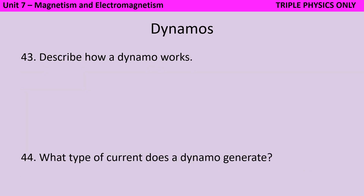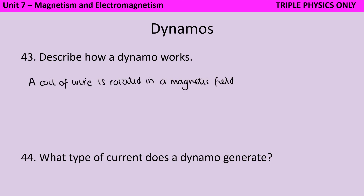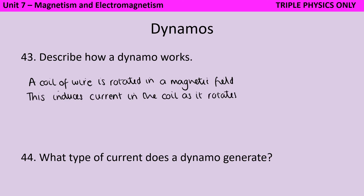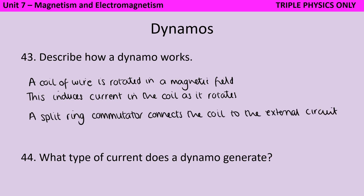The basis for a dynamo is similar to an alternator — it also involves a coil of wire that is rotated in a magnetic field, which still induces a current in the coil as it rotates. But rather than using slip rings, a split ring commutator connects the coil to the external circuit. This means that rather than generating alternating current as an alternator does, a dynamo generates direct current.